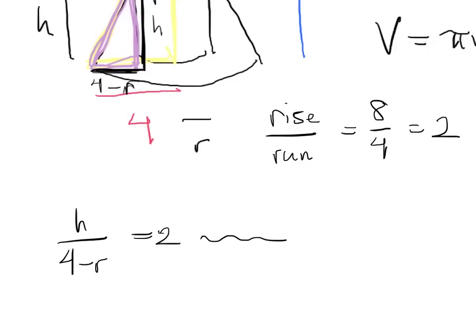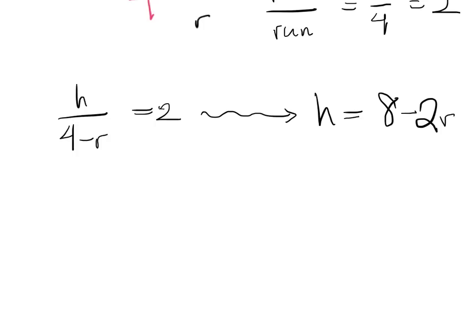And that tells us that h equals 8 minus 2r. And that's all we need to get volume in terms of one single variable.